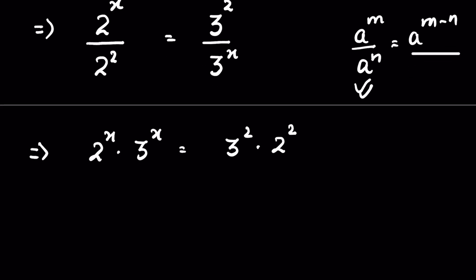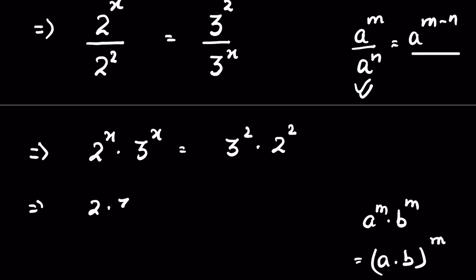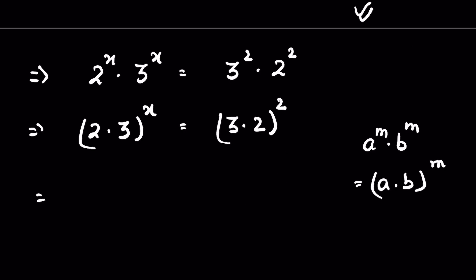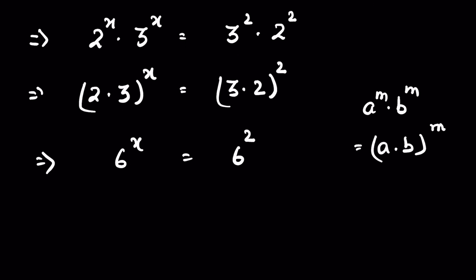Now there is an identity: if a raised to the power m times b raised to the power m, we can write it as a times b whole raised to the power m. Here, since the exponents are the same, we can write 2 times 3 whole raised to the power x, and here 3 times 2 whole raised to the power 2. So this gives us 6 raised to the power x is equal to 6 raised to the power 2.